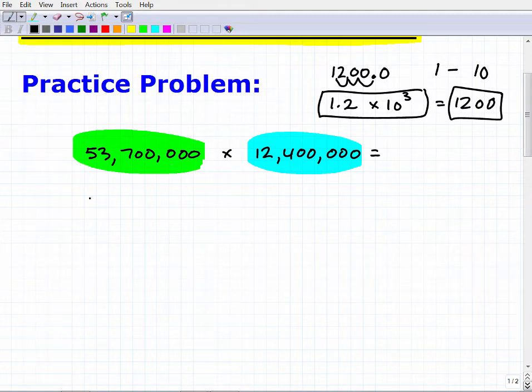So now let's come back to our problem. So you could see here that I can write this number, the digits five, three, seven, zero, zero, all this right here as five point three seven. I don't need the rest of the zeros. I just use these digits here that are not zero times ten to the what? Well, the decimal point would be right here, right, like point zero. So I had to move that over one, two, three, four, five, six, seven times. So that's ten to the seventh.